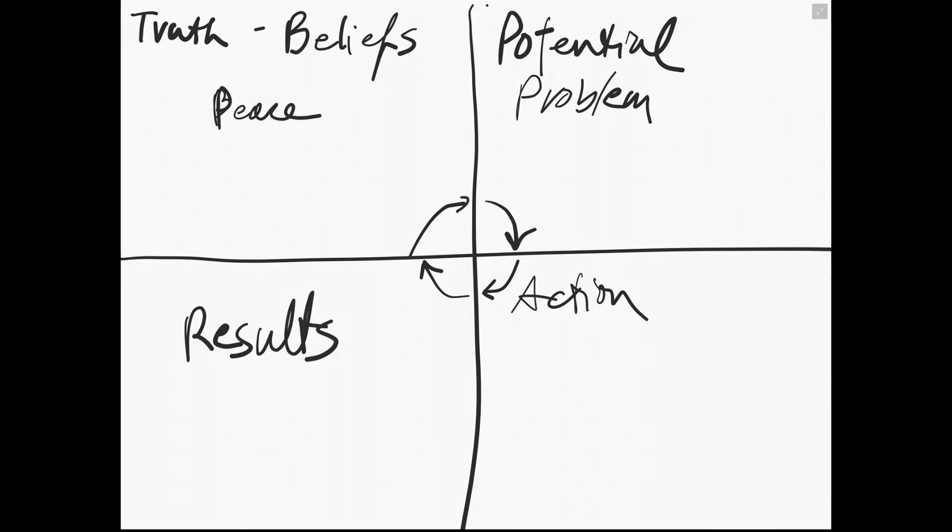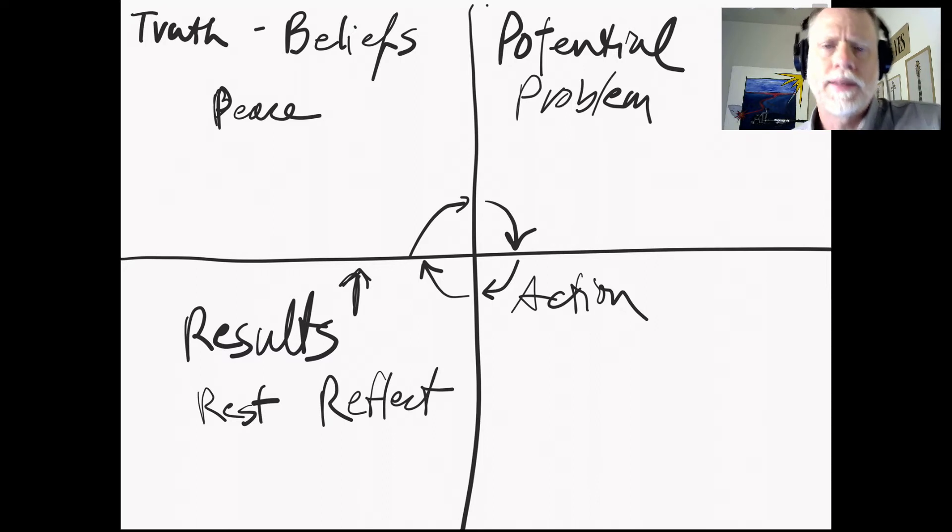And once we evaluate the results, we take a little rest in here after all this action and this other quad, we rest. And then we also reflect. Then we decide, well, you know what? I learned a lot in those actions. And I think maybe I can write a book. So we move into the next section again, and we start all over and maybe we work on the next part.